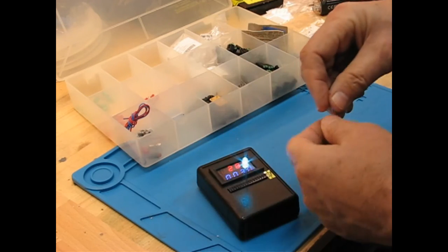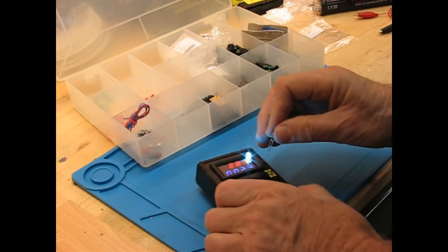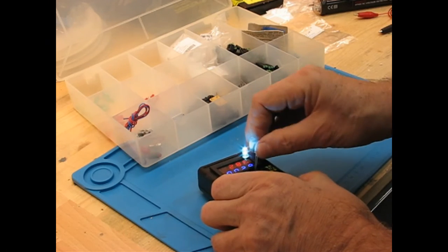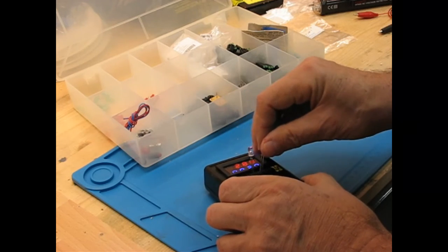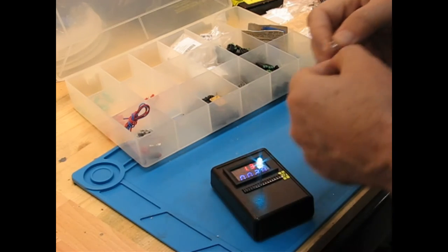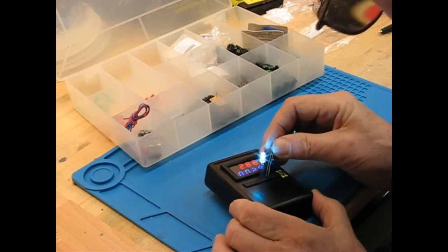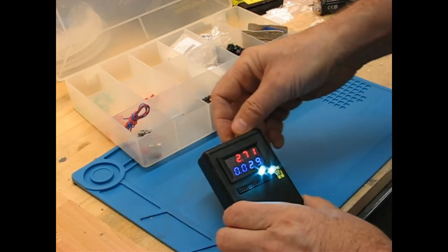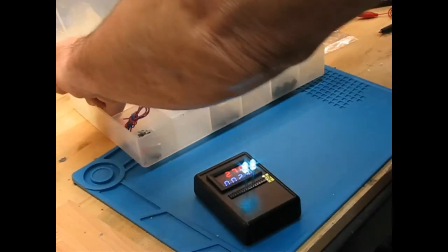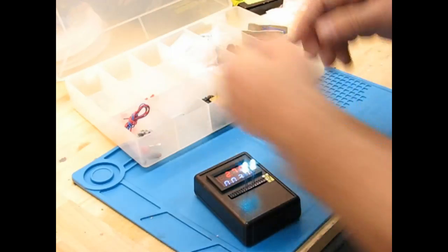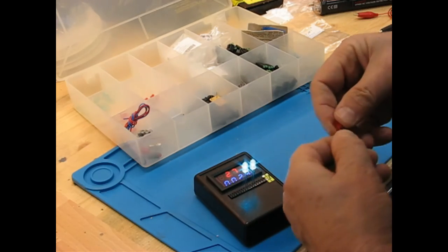As we put more LEDs in, it'll just divide the current across them. Get them in the right way. There we go. And you can just keep putting more and more LEDs in here, and the current will just keep going across them.